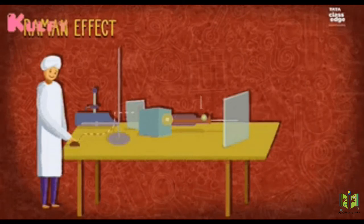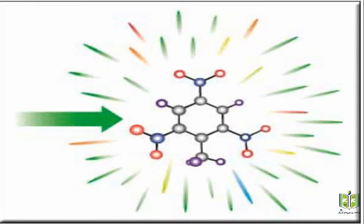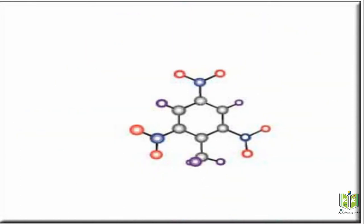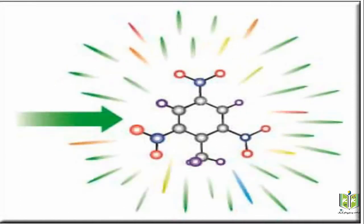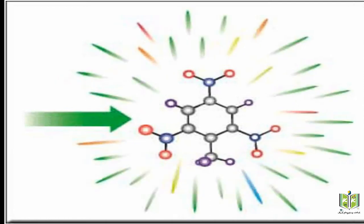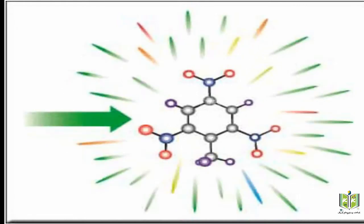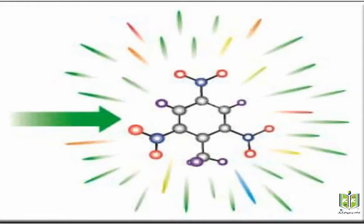Before going to the Raman effect, we learn what is scattering of light. Here we see the animation of the scattering of light. When a beam of light is incident on the particles of a substance, then a small amount of light travels in different directions. This is known as scattering of light.